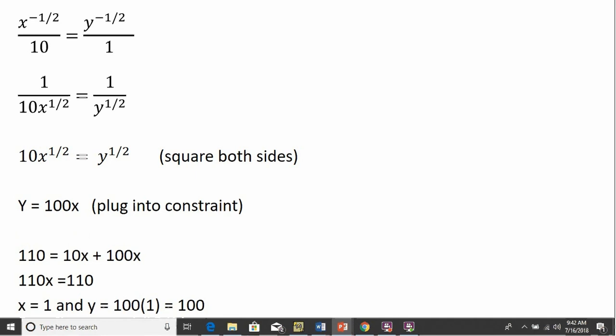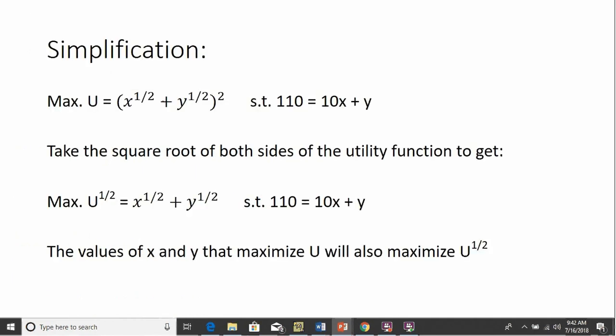Let me just show you kind of one trick here, maybe simplification. We started with this utility function. It's a little bit messy. What we could have done was take the square root of both sides. So taking the square root of both sides, on the left hand side, you got the square root of U. On the right hand side, the square root of this will just leave the following. And we could proceed to maximize this equation. And what's nice is the values of X and Y that maximize U will also be the same values that maximize the square root of U. So you'll get the same values that we just saw in the first example.